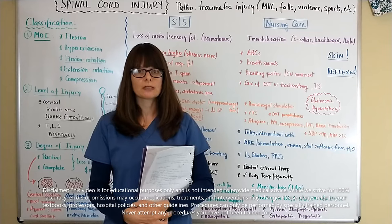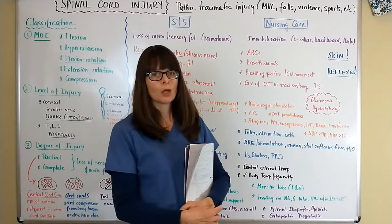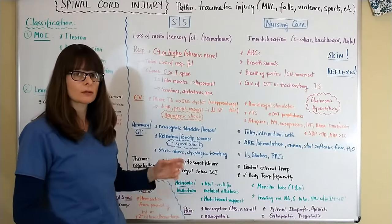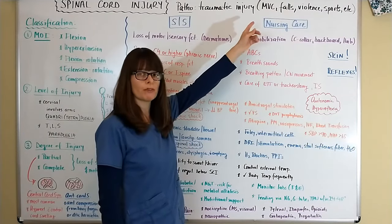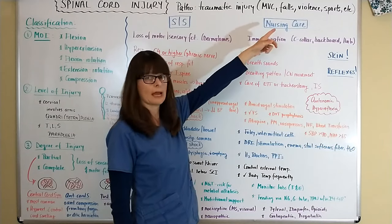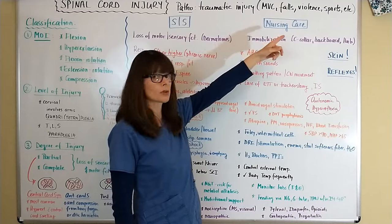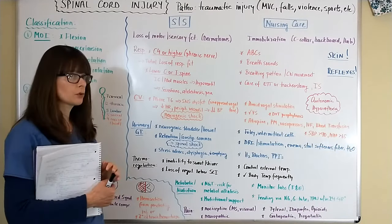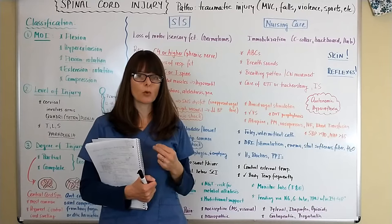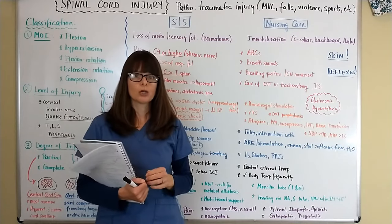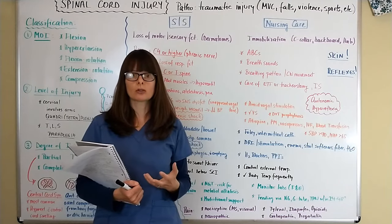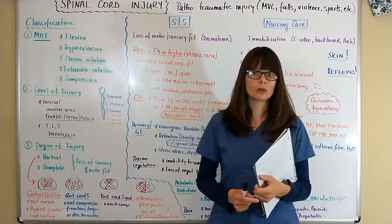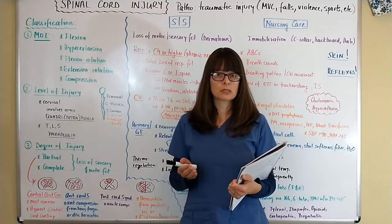Welcome to Nursing School Explained. In this video on spinal cord injury, we'll first look at the pathophysiology. Typically, there's some sort of traumatic injury — most spinal cord injuries are related to motor vehicle crashes, falls, acts of violence such as stabbings or gunshot wounds, or traumatic sports events. We also have to think about the primary degree of injury and the secondary injury. Primary injury occurs from the actual insult to the spinal cord itself, while secondary injuries result from bleeding, hemorrhage, edema, or ischemia to the spinal cord.